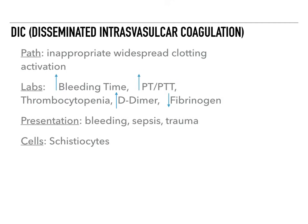The last one is DIC, or Disseminated Intravascular Coagulation. This is an inappropriate widespread clotting activation. DIC is complex, but easy to understand if you break it down. It can happen secondary to trauma, sepsis, or obstetric complications. There's an inappropriate activation of the clotting cascade — you consume all of your clotting factors, microthrombi form throughout the body, and you're occluding various parts of the body. Because you're using up all the clotting factors, the PT and PTT actually go up.